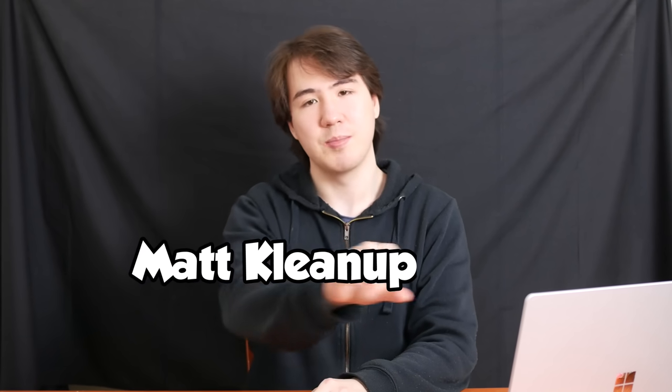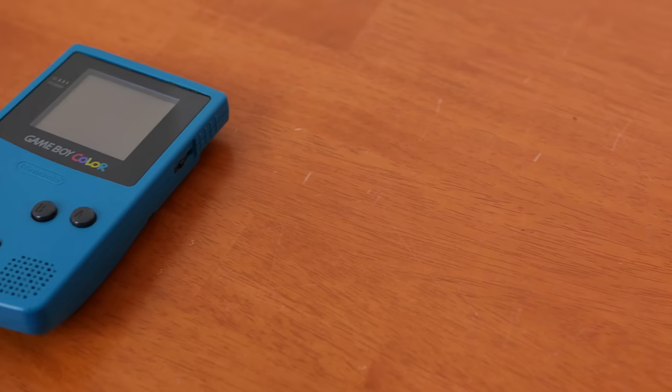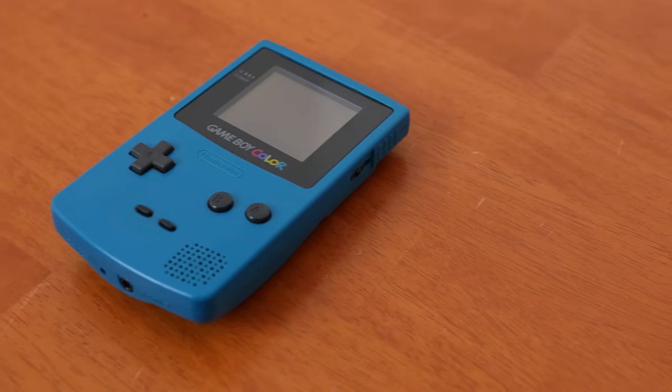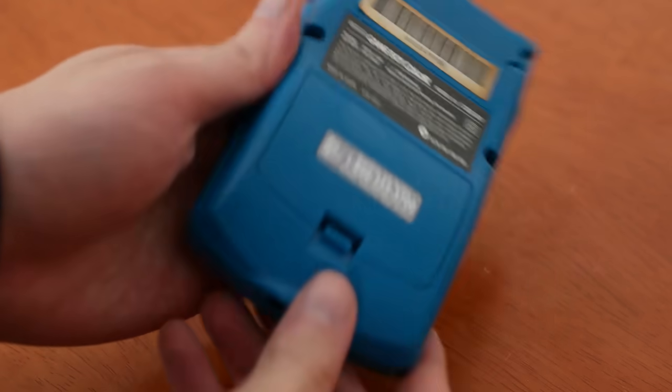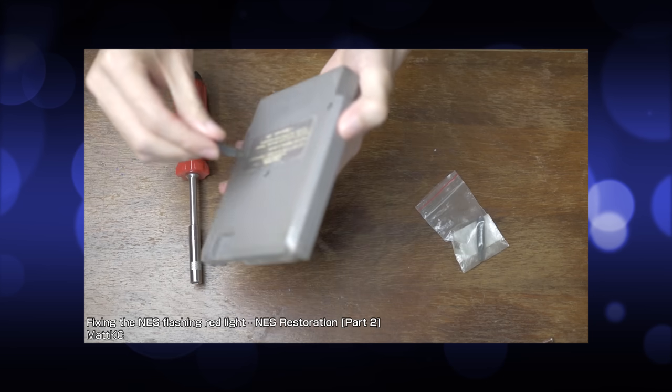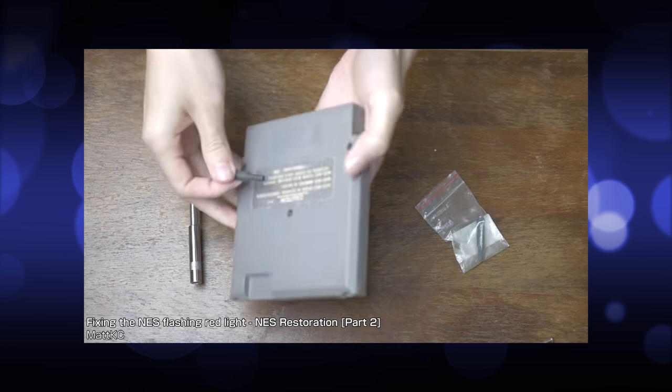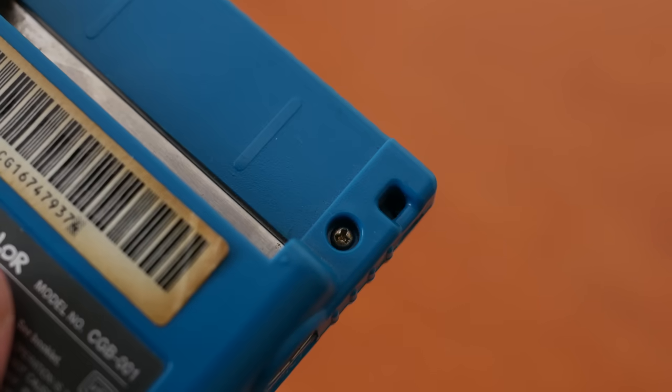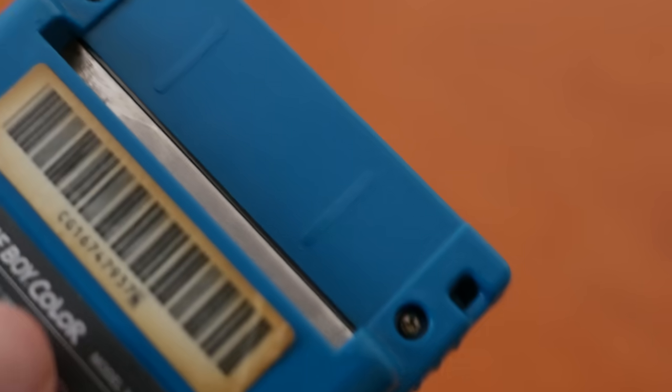Well, as we all know, Matt KC stands for Matt Cleanup Crew, so let's get started. First, I want to say I've been wanting to repair this thing since early March, but I learned, much to my dismay, that it uses these proprietary tri-wing screws. I already have screwdrivers for some of Nintendo's other proprietary screws, but somehow I'd gotten this far without ever owning a tri-wing.